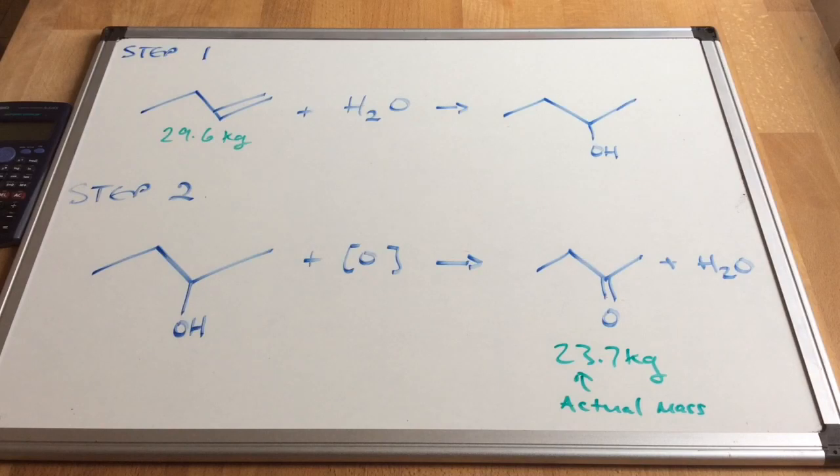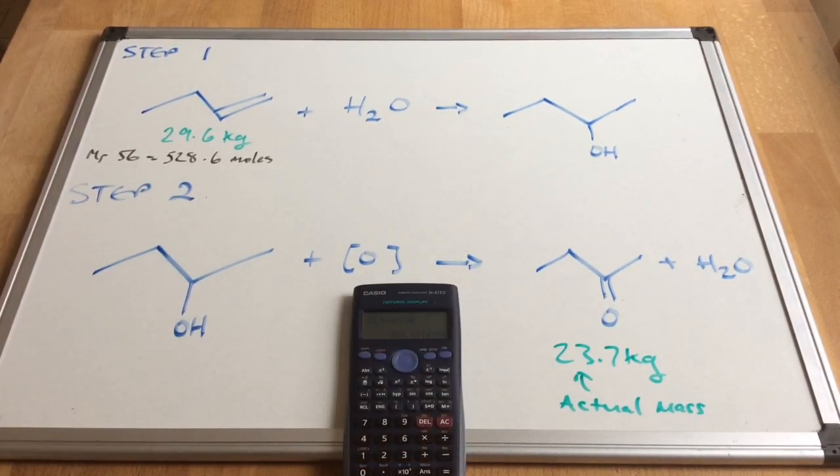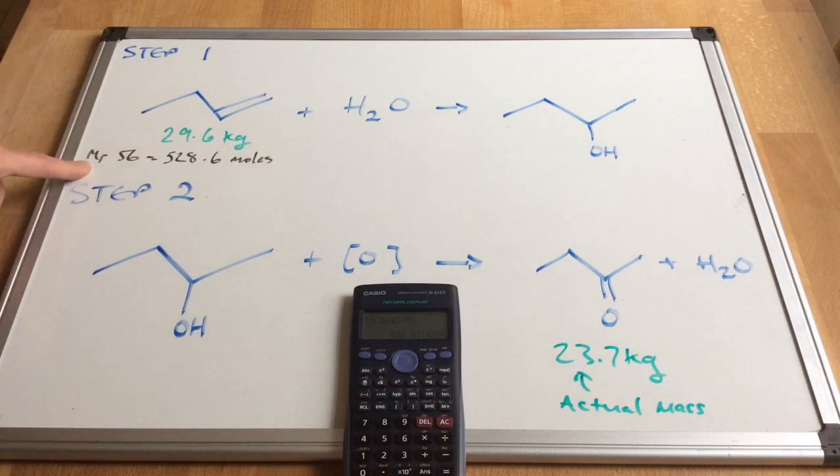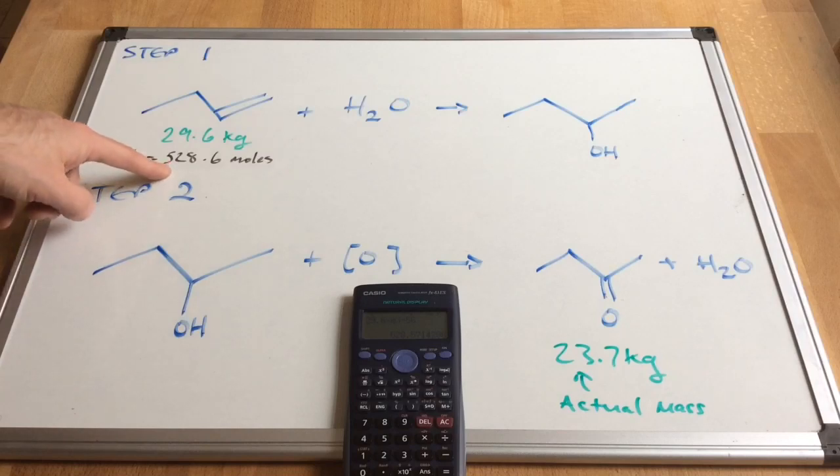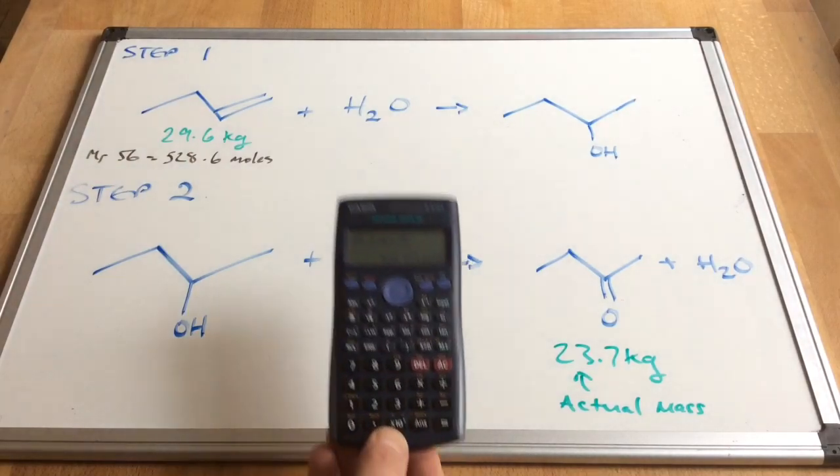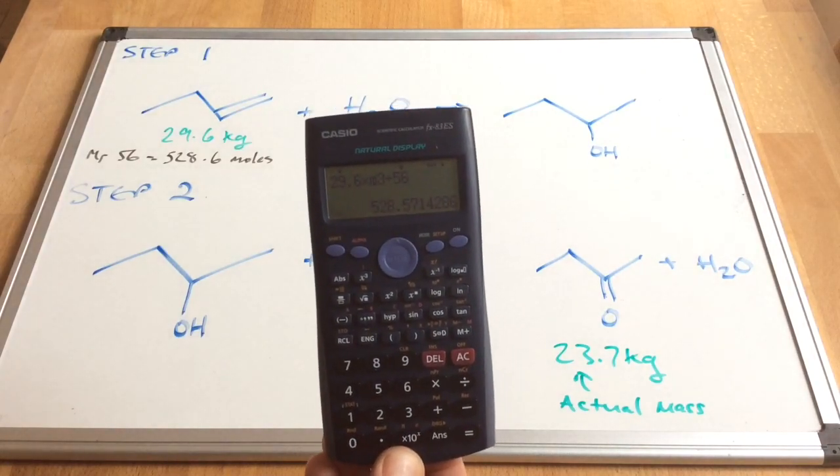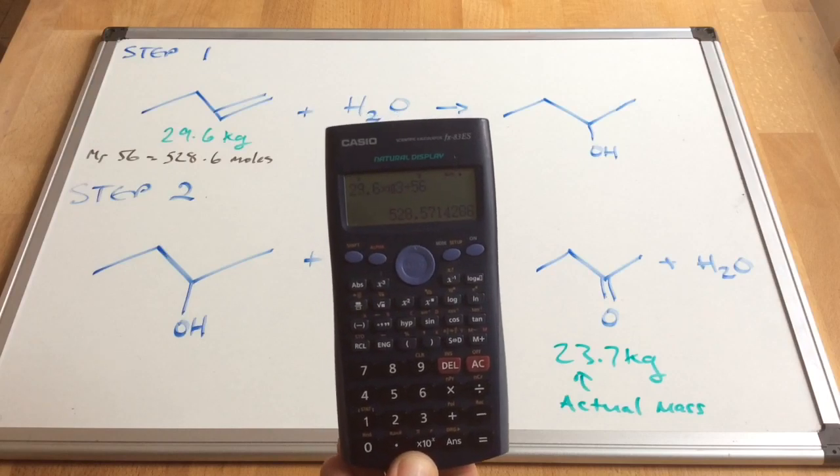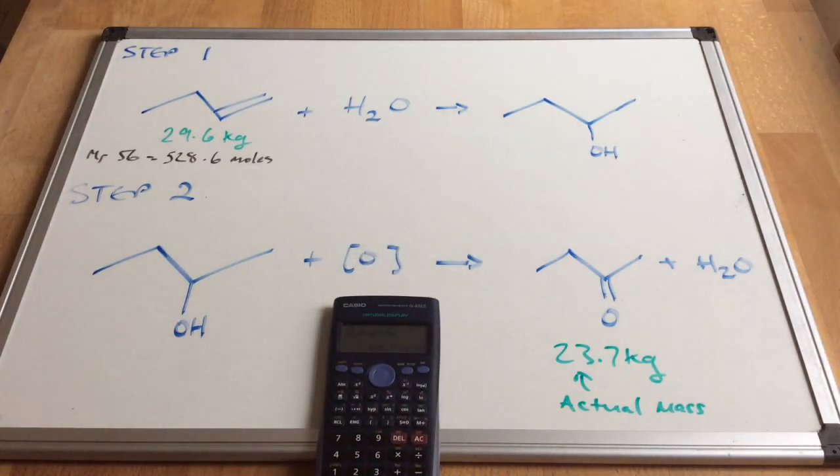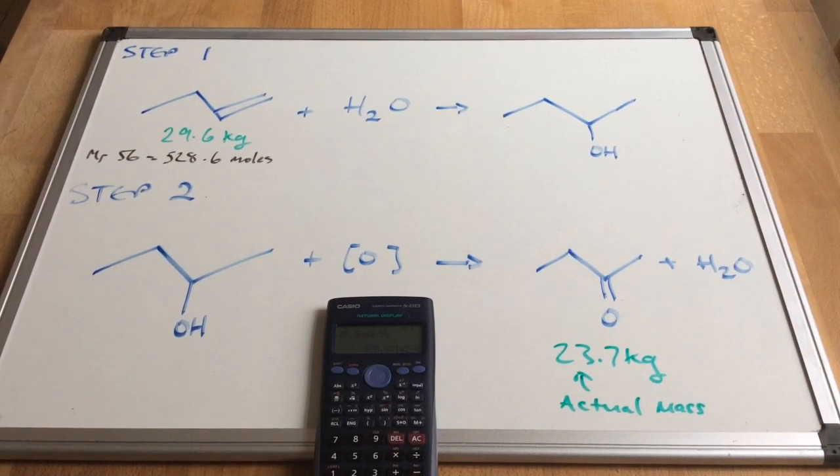I will do the mole version as well just to show you that you get the same answer, but let's look at the masses. So the first thing we need to do is calculate how many moles of butane we've got. The calculation is performed by taking the mass of butane, turning into grams and dividing by the MR which is 56, so that gives us a moles of 528.6 and I've just rounded that to one decimal place. You can see on the calculator there: the calculation is 29.6 times 10 to the 3 - remember mole calculations must be in grams - divided by the MR of 56, and there's the calculator value on the screen there.